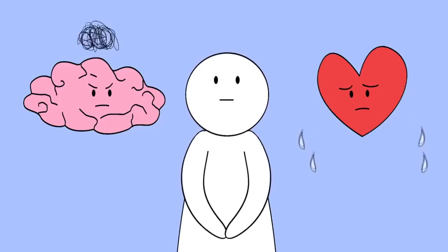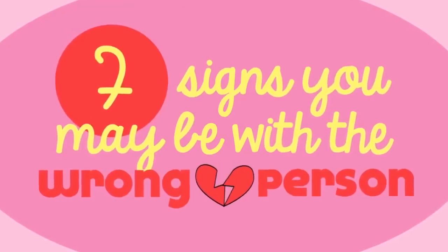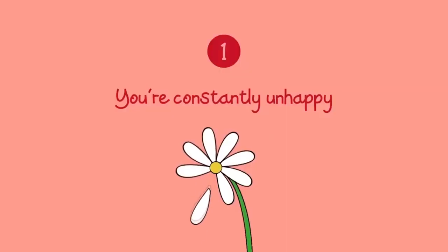So are you needlessly worrying or is there really something wrong with the relationship? Here are seven signs you may be with the wrong person.